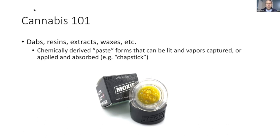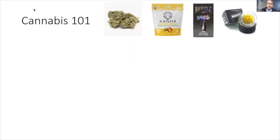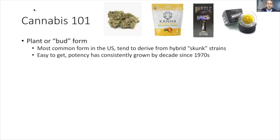For folks enmeshed in cannabis culture, dabs, resins, and extracts — what I'll globally call paste forms — can be lit and you capture the vapors, or you can apply and absorb them. These tend to be very high THC, designed to be extremely potent forms of cannabis ingestion. To summarize: the plant or bud form is the most common and easiest to get, and its potency has consistently grown. In the US, most plant or bud form will be high potency.